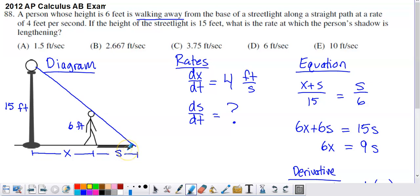S to be the length of the shadow. And then I also had the 15 and the 6 labeled from the other information that we just went through.